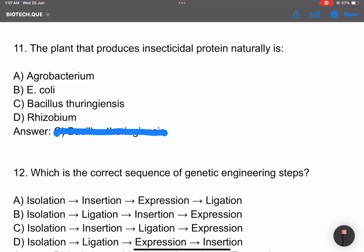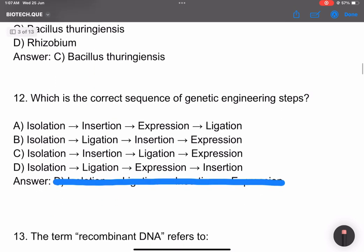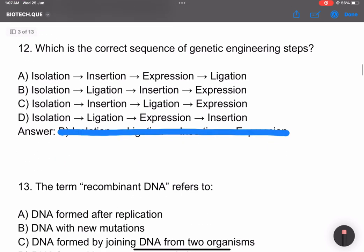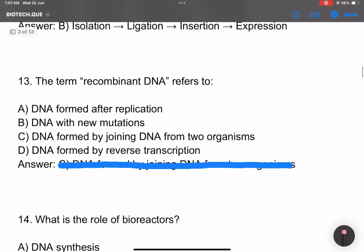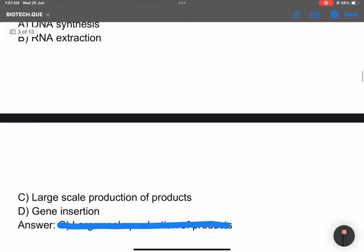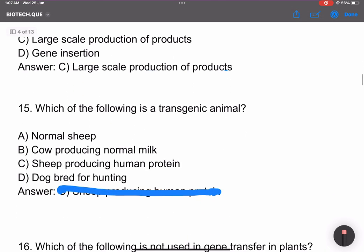Question 9: DNA fingerprinting involves VNTR. Question 10: Which enzyme is used in PCR? Taq polymerase from Thermus aquaticus. Question 11: The plant that produces insecticide protein is Bacillus thuringiensis. Question 12: What is the correct sequence of genetic engineering? The term recombinant DNA refers to DNA formed by joining fragments.